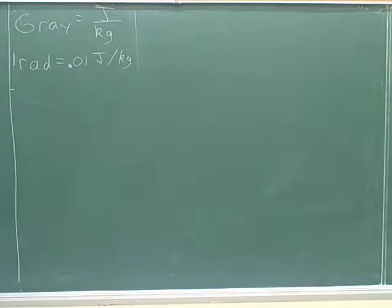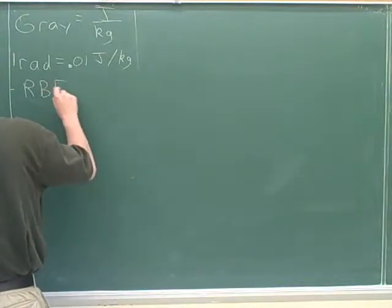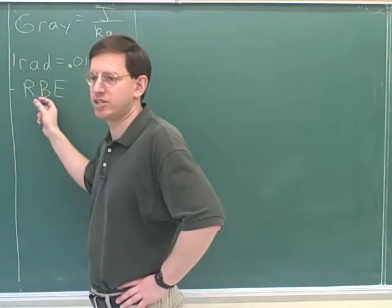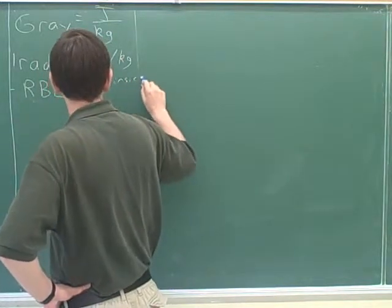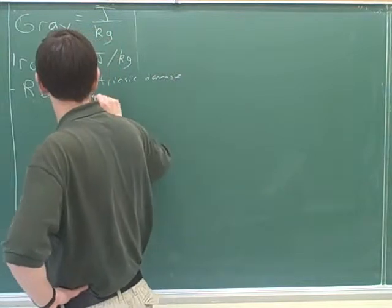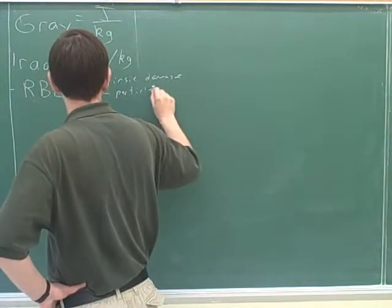All right. So one thing that affects how damaged someone is going to be by radiation is how many rads they're being exposed to. However, it also turns out that there's another factor. Some particles' radiation is just more intrinsically damaging than others. It turns out that, I don't know which ones are the most damaging. Maybe a neutron might be more damaging than, say, an x-ray, for example. Different types of particles have greater effects, even if they have the same number of rads. So we need another factor, which is the RBE. I believe that stands for the relative biological effect. This just tells you how intrinsically damaging the different types of particles are. So each particle has a different RBE. Intrinsic damage from different types of particles.